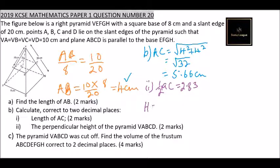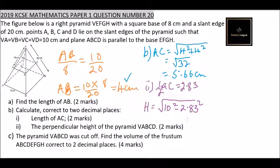The height equals the square root of 10 squared minus 2.83 squared. Using your calculator, the height is 9.75 centimeters. That is how you work out part b.